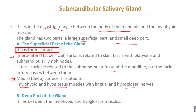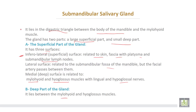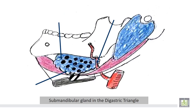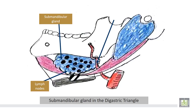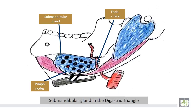The medial or deep surface of the gland lies on the mylohyoid and hyoglossus muscles, with the lingual and hypoglossal nerves between them. The deep part of the gland lies between the mylohyoid and the hyoglossus muscle. This is the digastric triangle, the sub-mandibular salivary gland, the sub-mandibular lymph nodes, and the facial artery which takes a tortuous course.